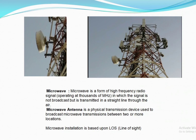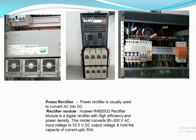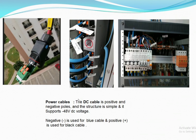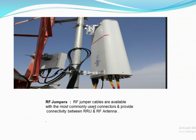A power rectifier and battery bank are used for energy backup. The power rectifier converts AC current into DC. The Huawei R4850 G2 rectifier module provides a capacity of minus 54 volts DC. The positive cable is black and the negative is blue; the blue cable connects to the circuit breaker, the black cable connects to the bus bar to support neutral voltage, and minus is for phase voltage.